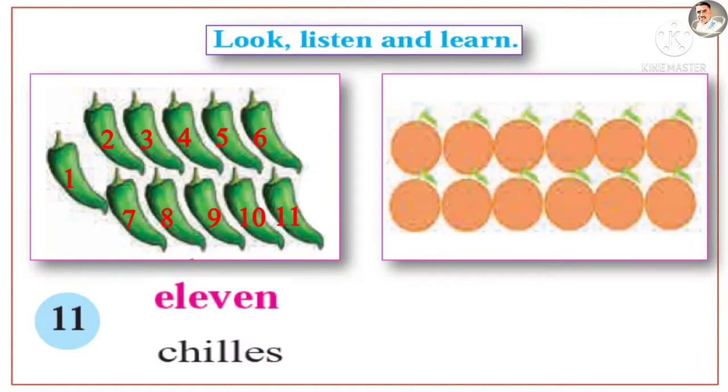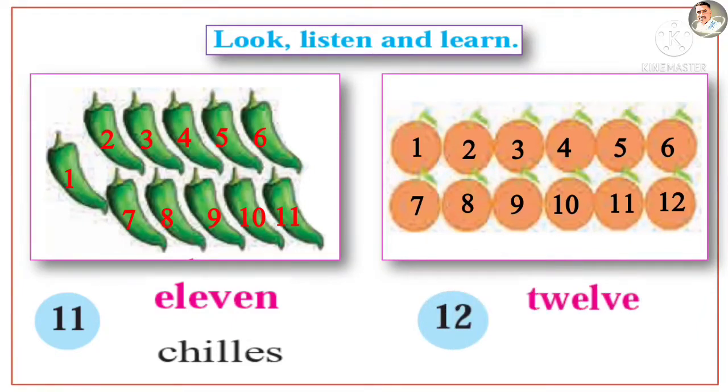How many oranges are there? 12. Twelve. T-W-E-L-V-E. 12 oranges.